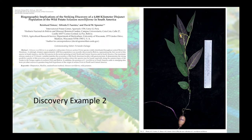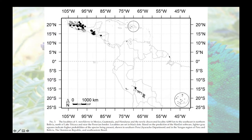The second example is a striking discovery of a 4,000 kilometer disjunct population of wild potatoes in South America. You can see occurrence points as black dots and the niche model showing potential distributional areas in Mexico, northern Central America, a little bit in the Caribbean, southeastern Brazil, and a larger area in Bolivia. Lo and behold, they found a new population of this species in precisely those areas.